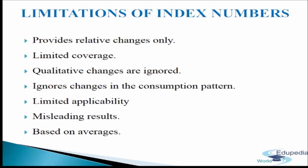Fifth limitation: Limited applicability. Index numbers are generally constructed for some specific purpose. If used for some other purpose, the result may not be true. There are no all-purpose index numbers. Sixth limitation: Misleading results. Index numbers may not be perfect if the wrong base year, wrong formula, wrong weightage, or wrong sample of items has been taken — in these cases, results would be misleading. Seventh limitation: Based on averages. Index numbers are generally based on averages of prices and items, so they represent estimates of relative changes only and can be generalized only — they cannot apply to individual units.